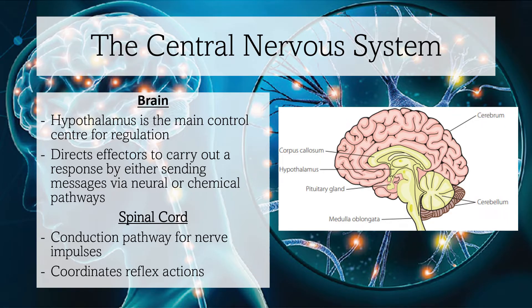Some of the conditions that need to be regulated are heart rate, body temperature, and blood pressure. The hypothalamus is the main link between the nervous and the endocrine system. The spinal cord's main function is to conduct a pathway for nerve impulses from receptors around the body to the brain.